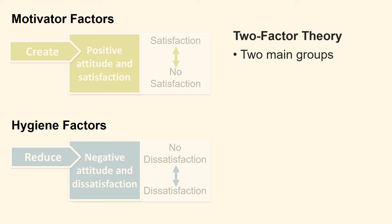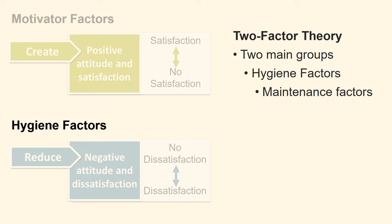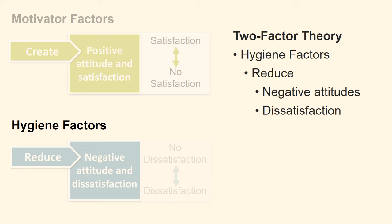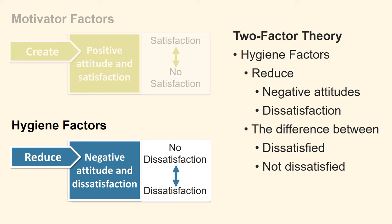Hertzberg reached the conclusion that conditions in the workplace can be divided into two main groups of factors: hygiene factors, also sometimes called maintenance factors, and motivator factors. Hygiene factors can only prevent and reduce negative attitudes and dissatisfaction from employees. They are therefore the difference between dissatisfied and not dissatisfied. When management covers hygiene factors, they do not create satisfaction and thereby motivation — they only ensure that employees are not dissatisfied.